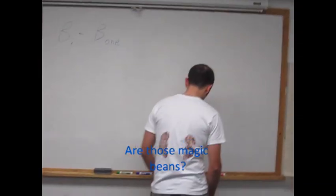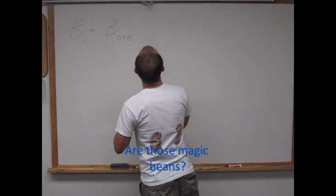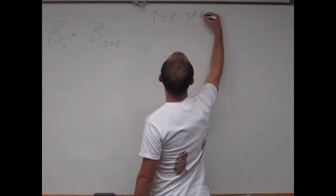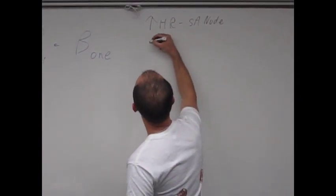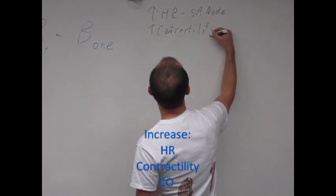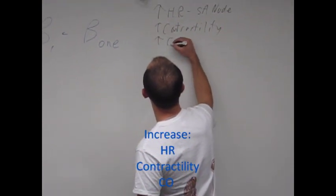So, increasing heart rate as I attack this anode, increase contractility of the horse, and of course that will increase the cardiac appetite.